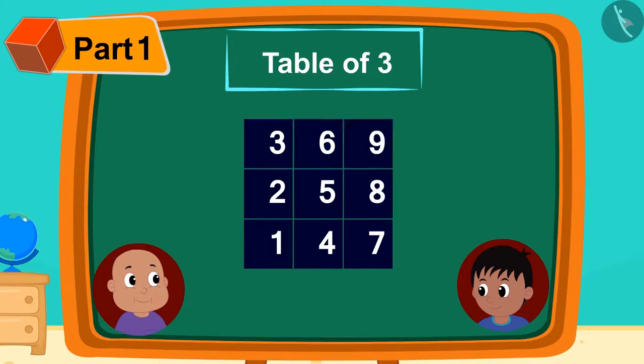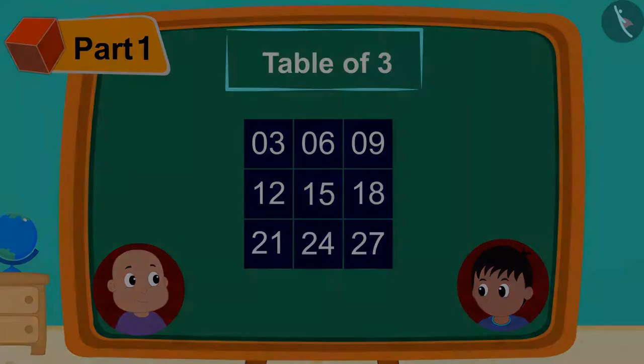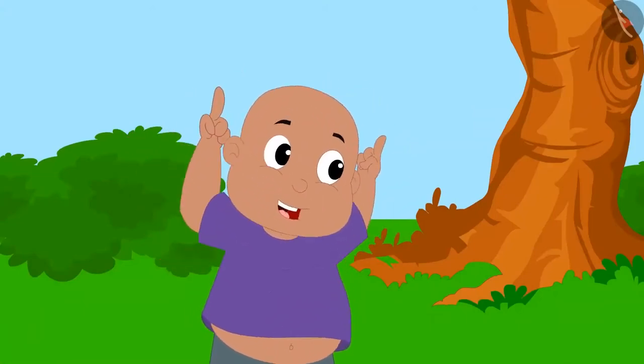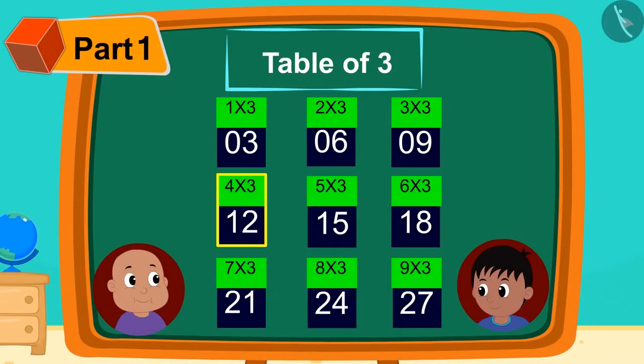Raju wrote 0 in front of the digits in the first line, 1 written next to the second line digits, and 2 written next to the digits of the third line. Bablu started dancing happily. Do you know why? Because he could see the table of 3 here.